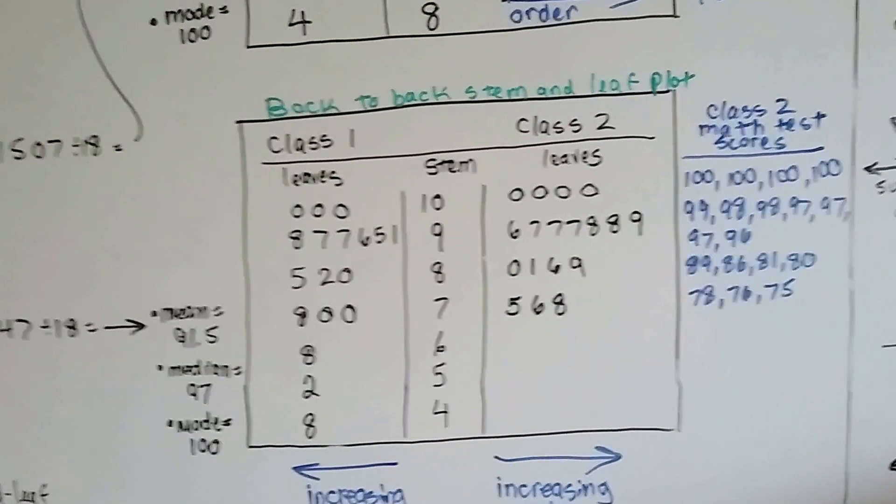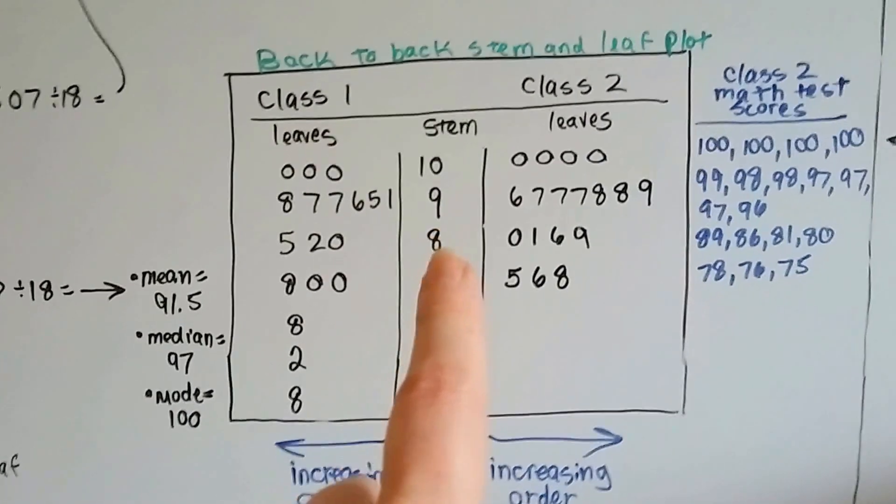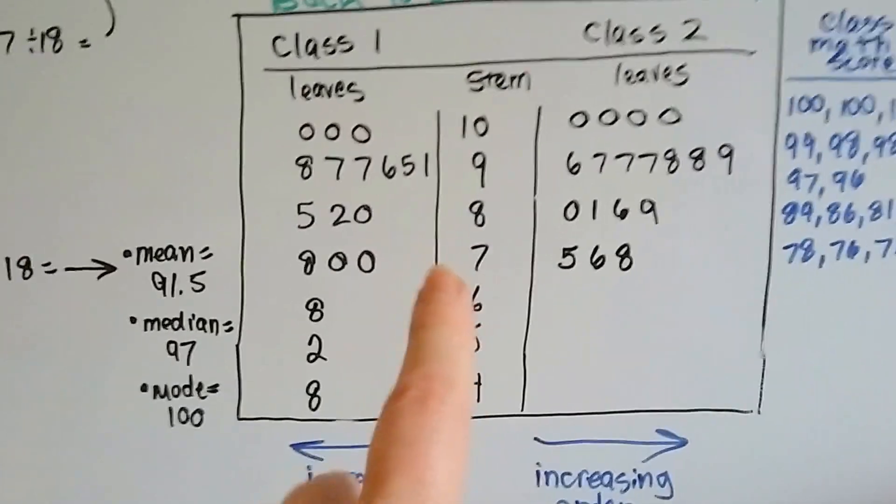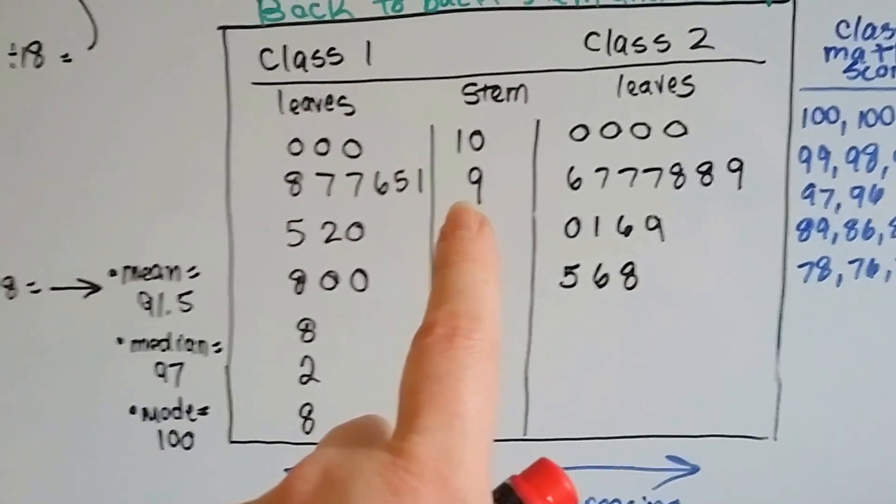it goes up as it goes to the right: 6, 7, 7, 8, 8, 9. So you can just look at these and tell right away between the two classes who got higher scores.